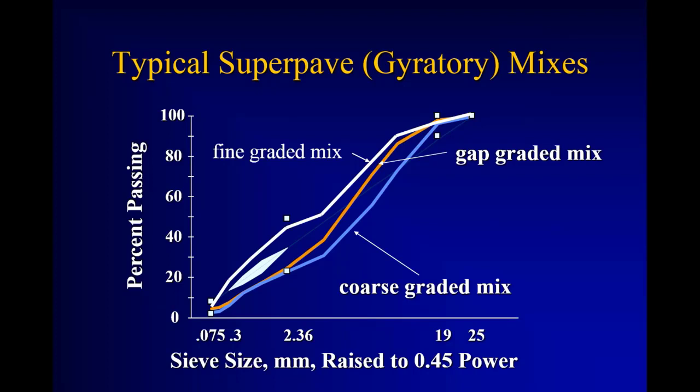Depending on the shape and curvature of the gradation line, we can have coarse graded mixes, fine graded mixes, or gap graded mixes like the SMA on Highway 94 west of Jamestown or south of Hankinson to the state line on I-29.